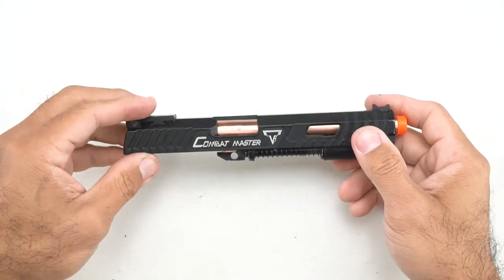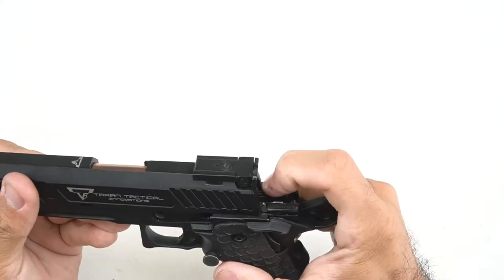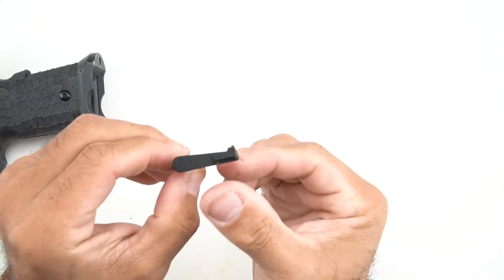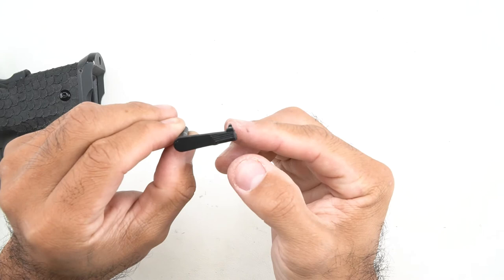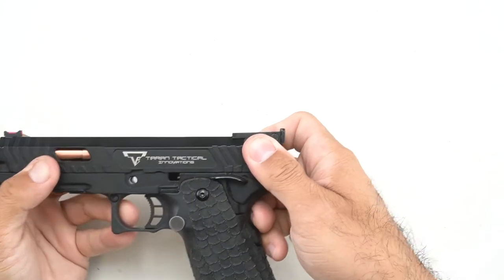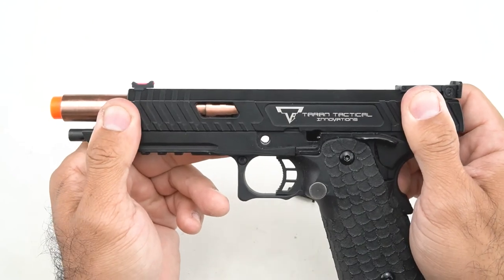After that, it's a simple matter of sliding the slide back onto the frame, pulling back to that first notch and then putting in the slide stop. Make sure that it's not getting caught on the frame. Otherwise, you'll scratch up the frame or the slide, or you might even damage the slide stop lever.